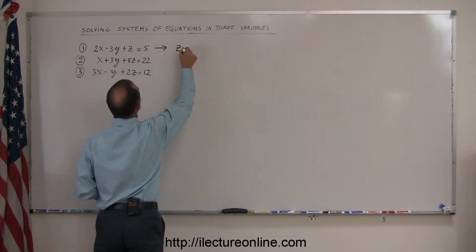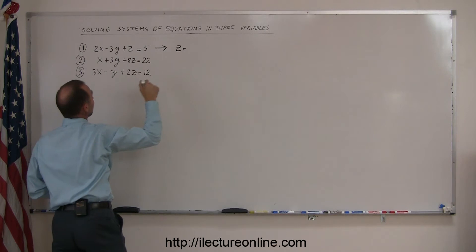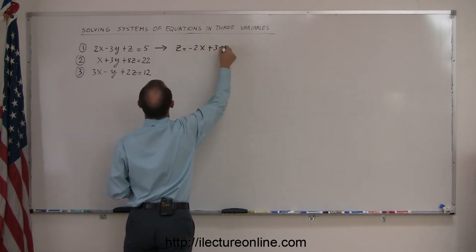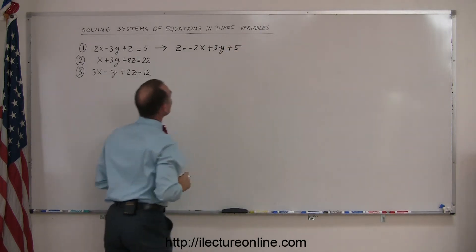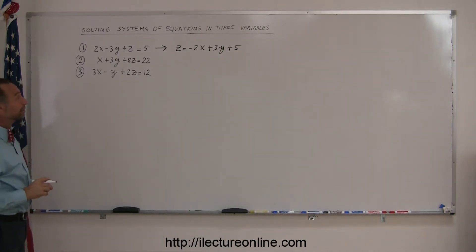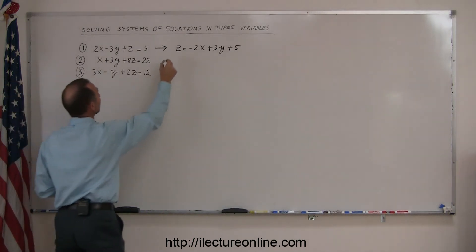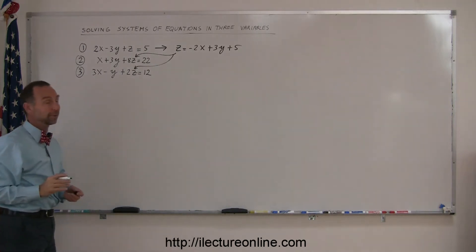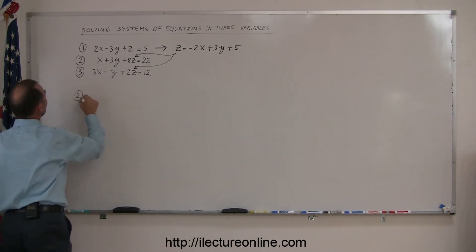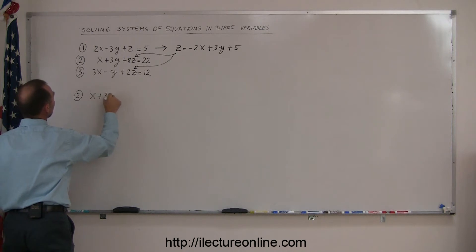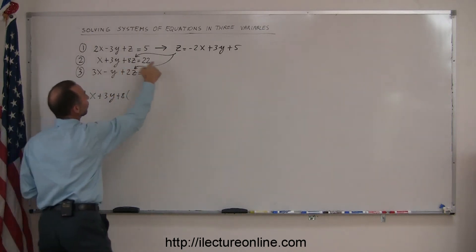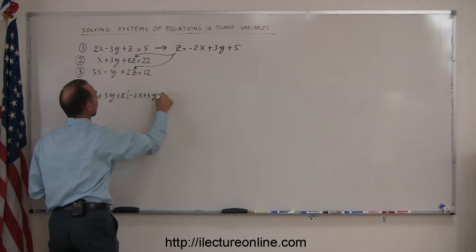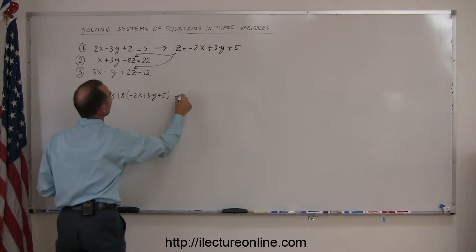So z equals — I'm going to move the 2x and the minus 3y to the other side of the equation, so we get z equals minus 2x plus 3y plus 5. I now take that value for z and plug it into the other two equations. I rewrite equation number two as x plus 3y plus 8 times z, which is minus 2x plus 3y plus 5, and that should equal 22.